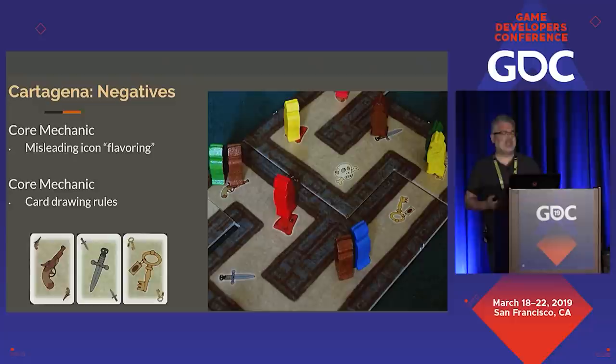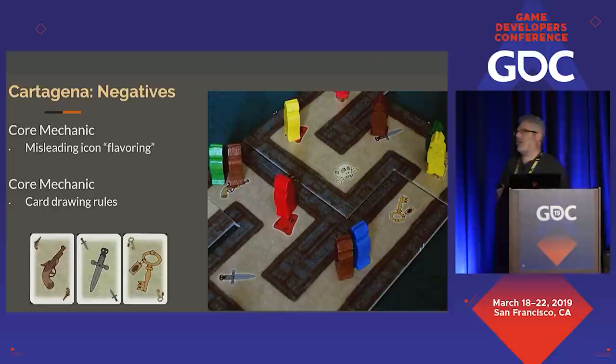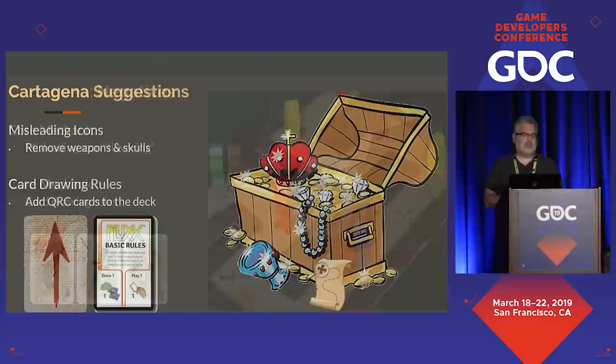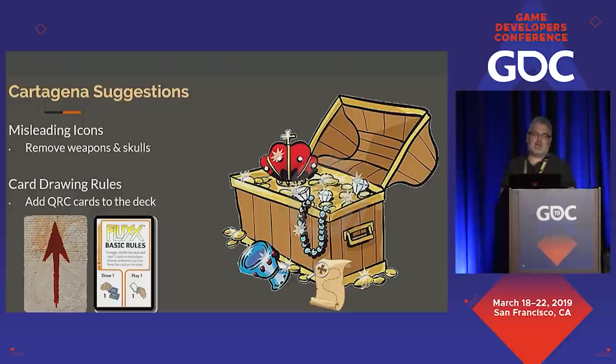The core mechanic of drawing and playing cards: they understood that playing cards moved them forward on the board, but they didn't understand that the way you get new cards is to move your player backwards to the closest occupied space and get that number of cards. Not very intuitive — but once you learn it, it makes sense. The teams' suggestions: remove the misleading icons — replace skull, gun, and knife with a crown, treasure map, and goblet. For the card drawing rules, replace the confusing arrow card with a quick reference card explaining the basic rules of moving forward by spending cards and getting cards by moving backwards.